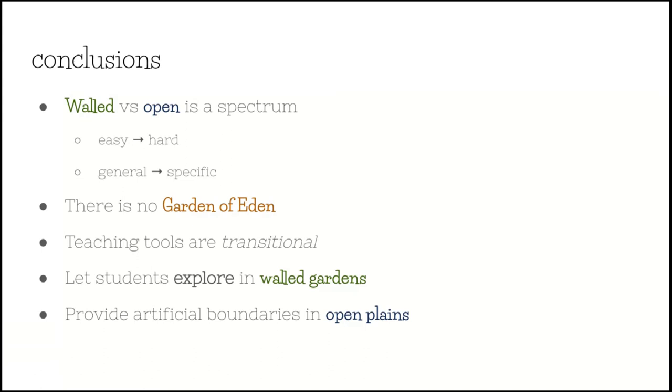And by providing artificial boundaries, you can help them feel safe — like they're in a walled garden — and slowly introduce them to the more open plains.